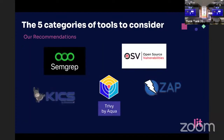Just to sum up our recommendations: for code scanners, open source SEMGREP is our choice. For dependency checkers, OSV Scanner. For infrastructure-as-code scanners, KICS is our way. For container scanning, Trivy is our winner. And finally, for runtime scanning, ZAP.